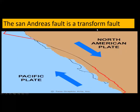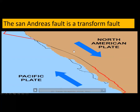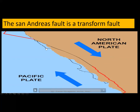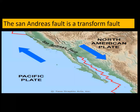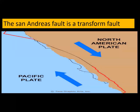The last type of plate boundary is the transform fault. The San Andreas fault is a transform fault. The North American plate is moving sideways in one direction while the Pacific plate is moving sideways in the opposite direction. The friction and stress that builds up because of the movement of these two plates can eventually lead to an earthquake. The red jagged lines in the animation represent the earthquakes.